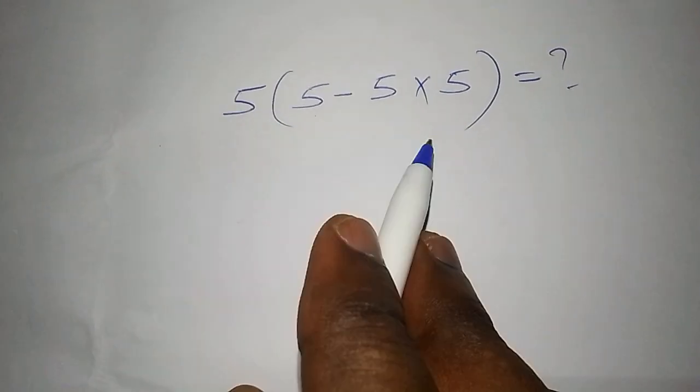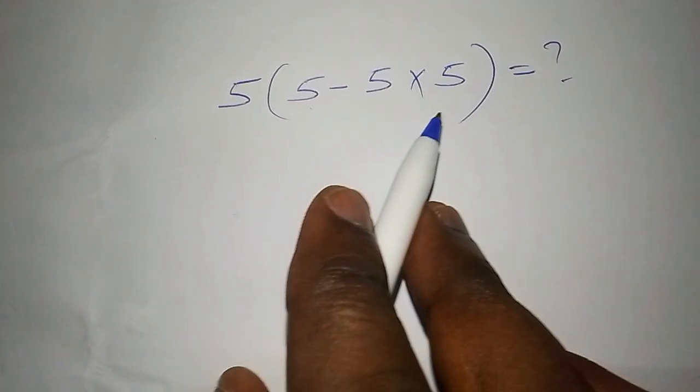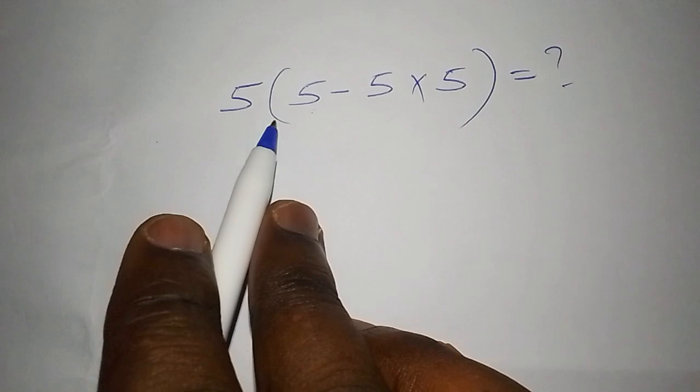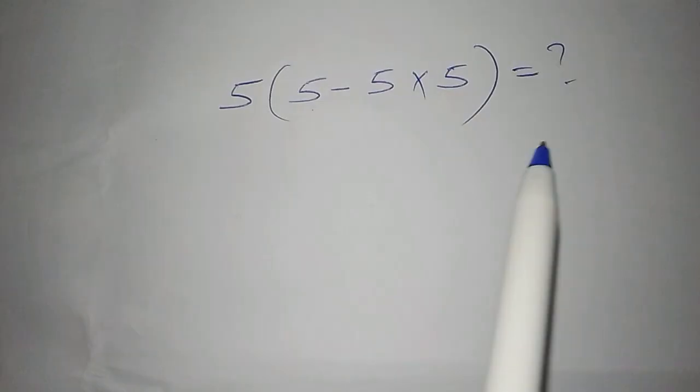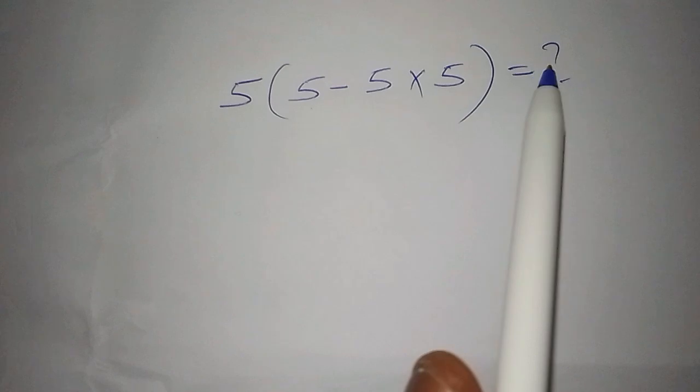Hello everyone. About 90% of people fail this math problem. It is 5 into bracket 5 minus 5 times 5. So what's the answer?